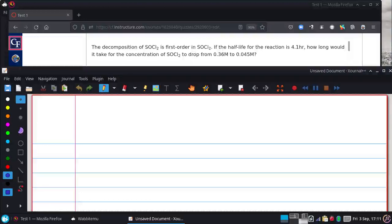Okay, the decomposition of SOCl2 is first order in SOCl2. If the half-life of the reaction is 4.1 hours, how long would it take for the concentration of SOCl2 to drop from 0.36 to 0.045?